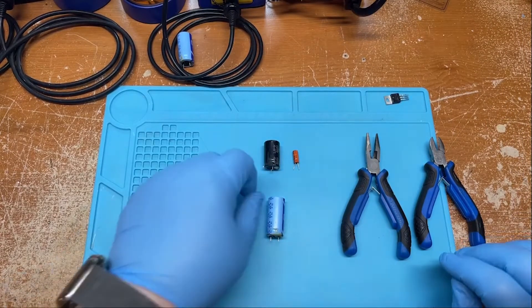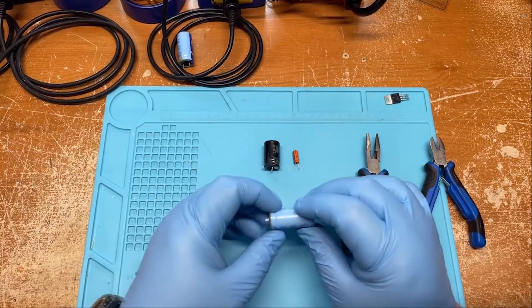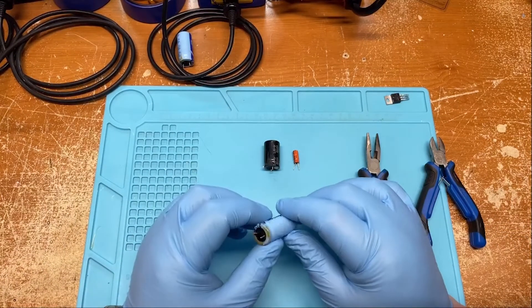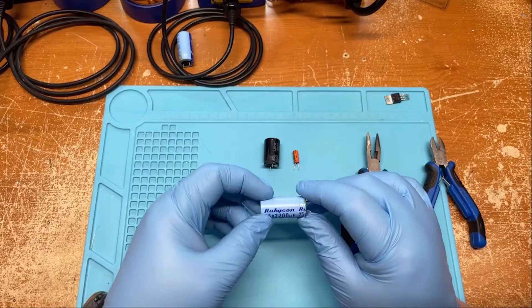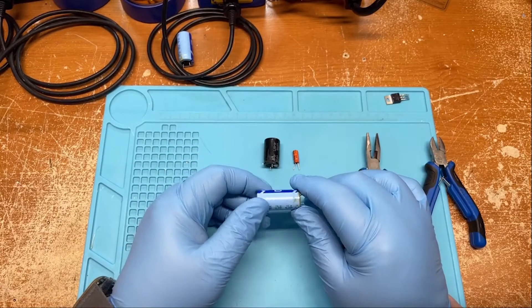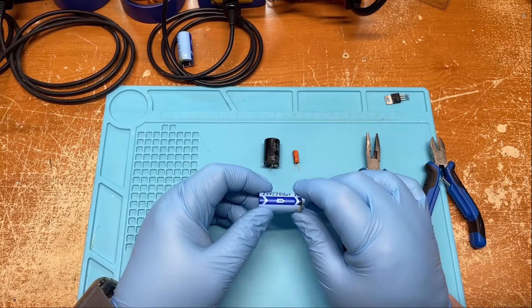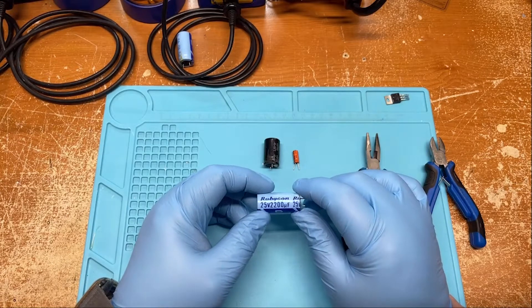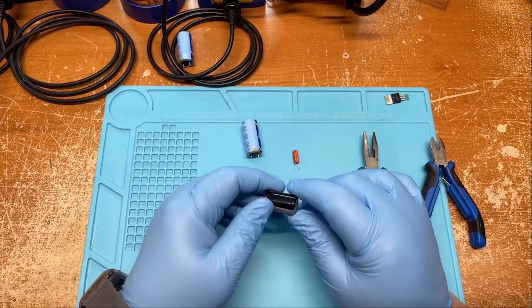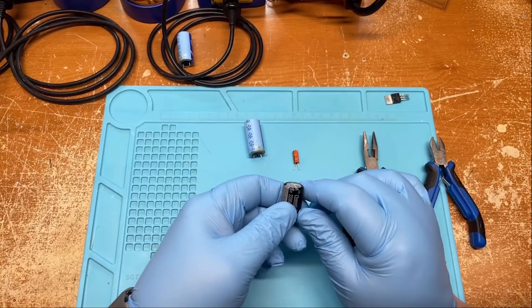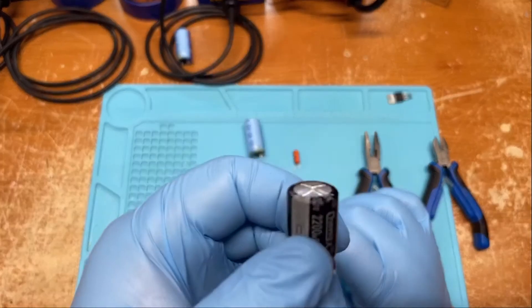Hello! So today I'm going to look into taking apart some capacitors. This one's really old. It came out of a ghetto blaster. 25 volt 2200 microfarad. And then this one isn't as old but you can see that it's slightly bulged at the top.